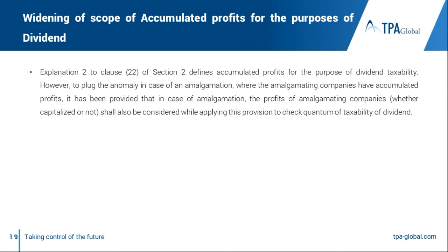The definition of accumulated profits has been widened. Under the earlier provision, loans to the extent of accumulated profits would be taxable as deemed dividend. There was a loophole where a company with accumulated profits in its balance sheet could merge or amalgamate into another company — the profits of the amalgamating company could be capitalized or otherwise handled, and the new company could pay advances to shareholders. To circumvent this, it has now been provided that the profits standing in the books of the amalgamated company would also be considered for calculating the accumulated profits of the amalgamated company.